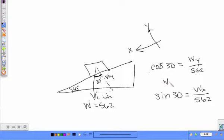So what is W_y? 467. And W_x? 281. So now, what's the next problem? The 562 Newton trunk is on the frictionless plane inclined at 30 degrees from the horizontal. So the same picture. Same information here. Find the acceleration of the trunk.